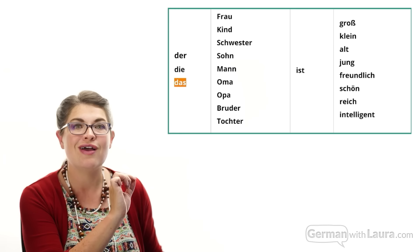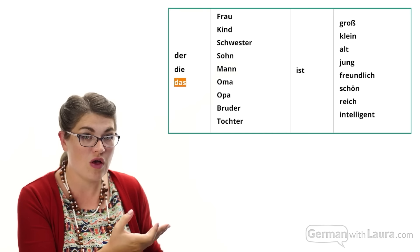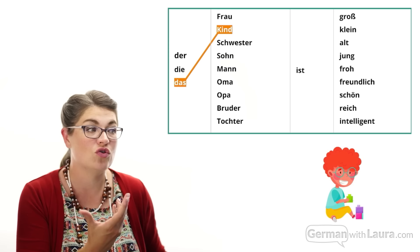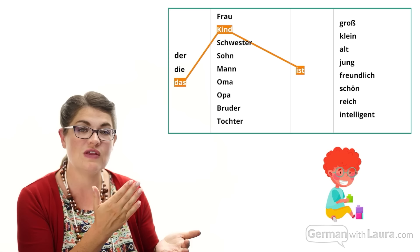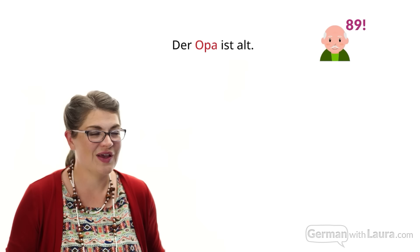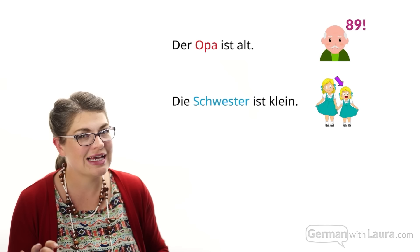One more example with this drill: 'das,' using the neuter way of saying 'the' in the nominative case for subject nouns. We pick a neuter noun such as 'Kind,' meaning child. The verb stays simple — just 'ist' — and then we practice a common adjective. 'Das Kind ist freundlich.' The child is friendly. So to recap: 'der Opa ist alt,' 'die Schwester ist klein,' 'das Kind ist freundlich.'